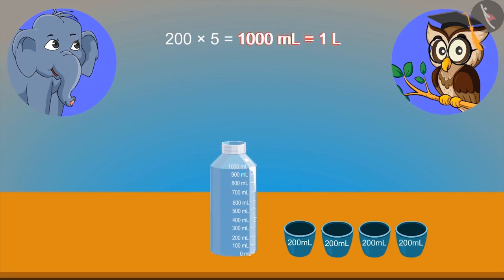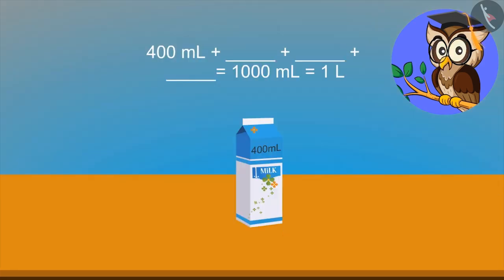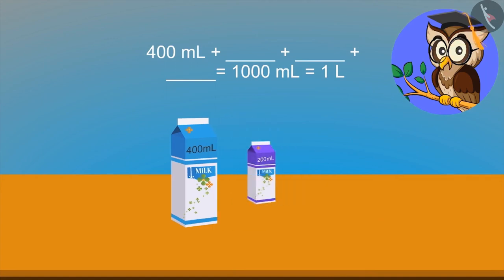See this. We have 400 ml of milk. We need 1000 ml or 1 liter milk. Now, look. These are the packets of 200 ml, 300 ml and 400 ml. Which three identical packets will combine to make 1000 ml?